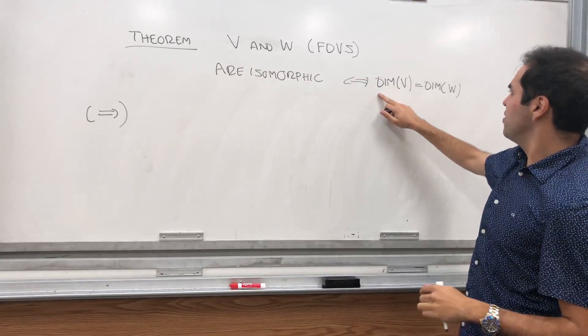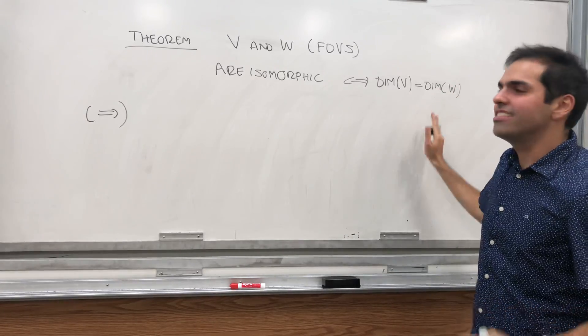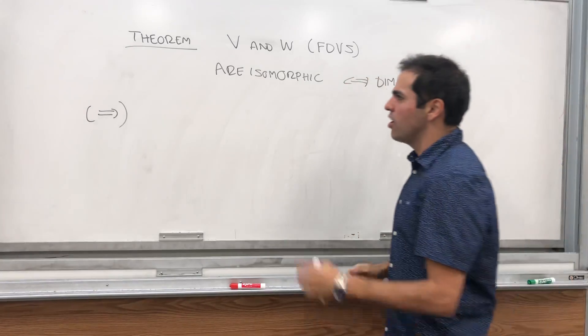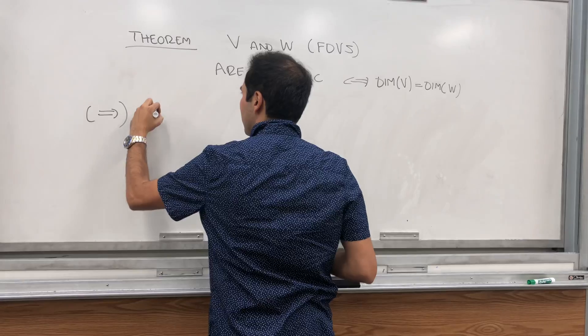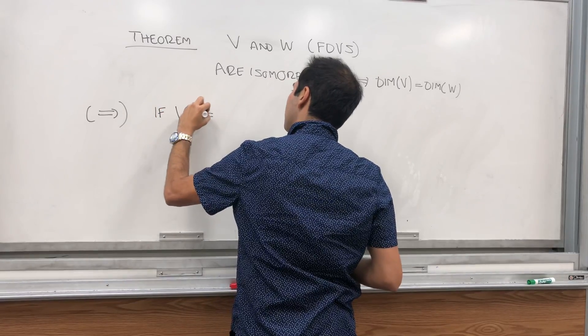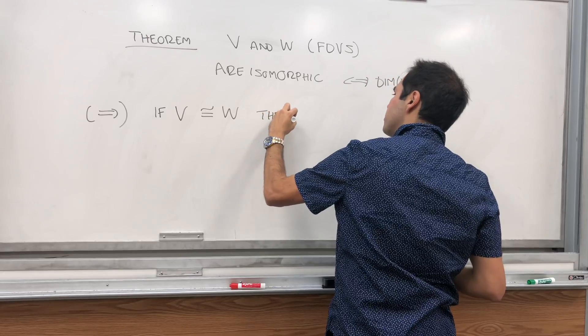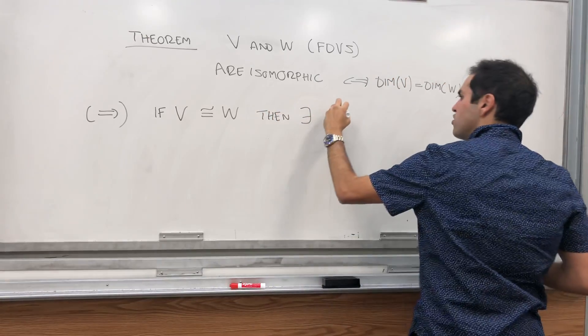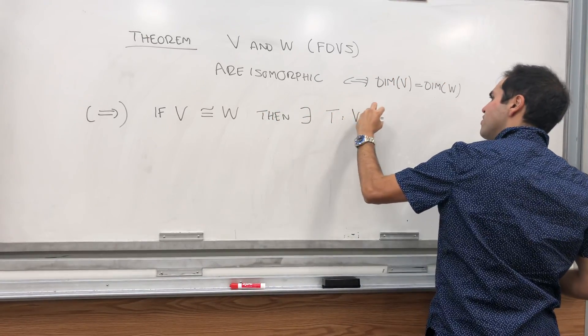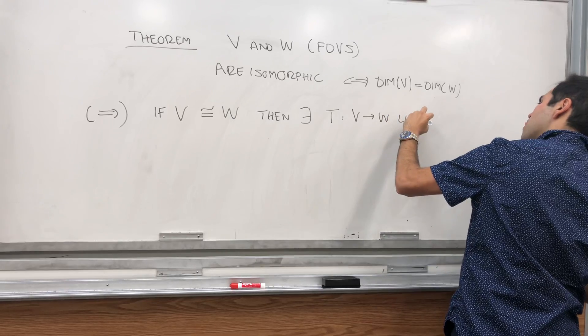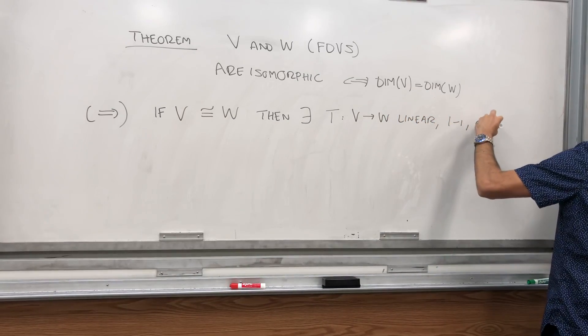So suppose, let's show first of all that it's a necessity. So suppose V and W are isomorphic. If V and W are isomorphic, then we know that there exists a linear transformation from V to W, linear, and then one to one and onto.